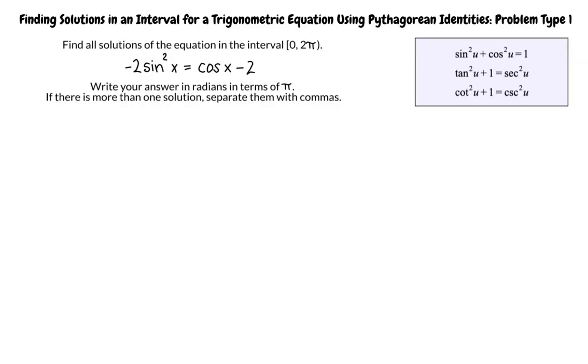Looking at this equation, I recognize that we can make a substitution using one of the Pythagorean identities. Do you know which one? I think we will use the first one listed because it is the only one that contains sine and cosine.